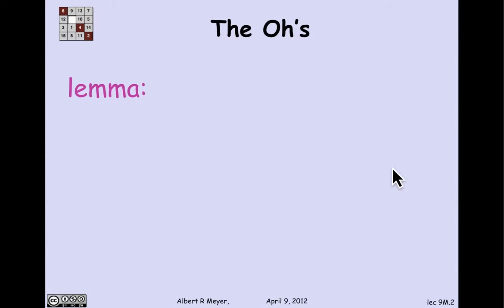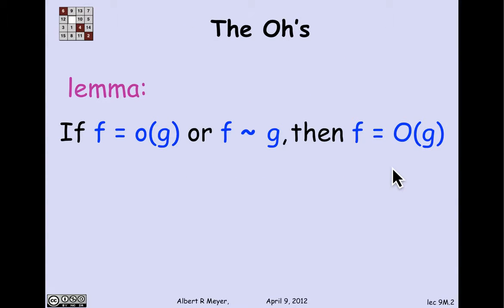An advantage of expressing asymptotic notations in terms of limits is that a bunch of their properties then become immediately obvious. Here's one. If f is little o of g or f is asymptotically equal to g, then in fact f is big O of g.